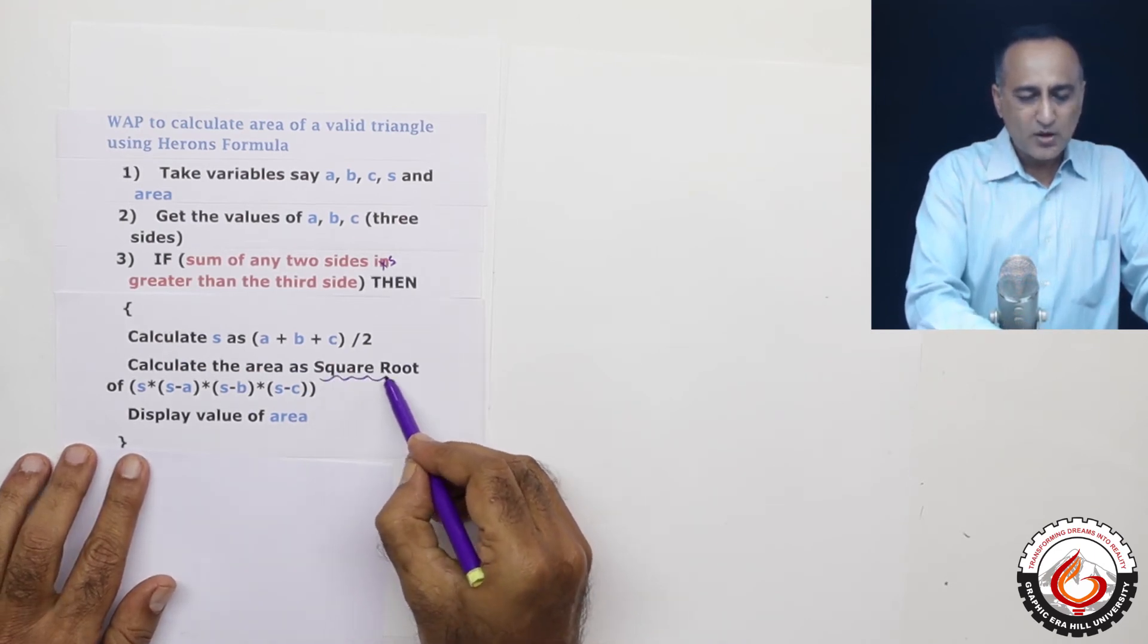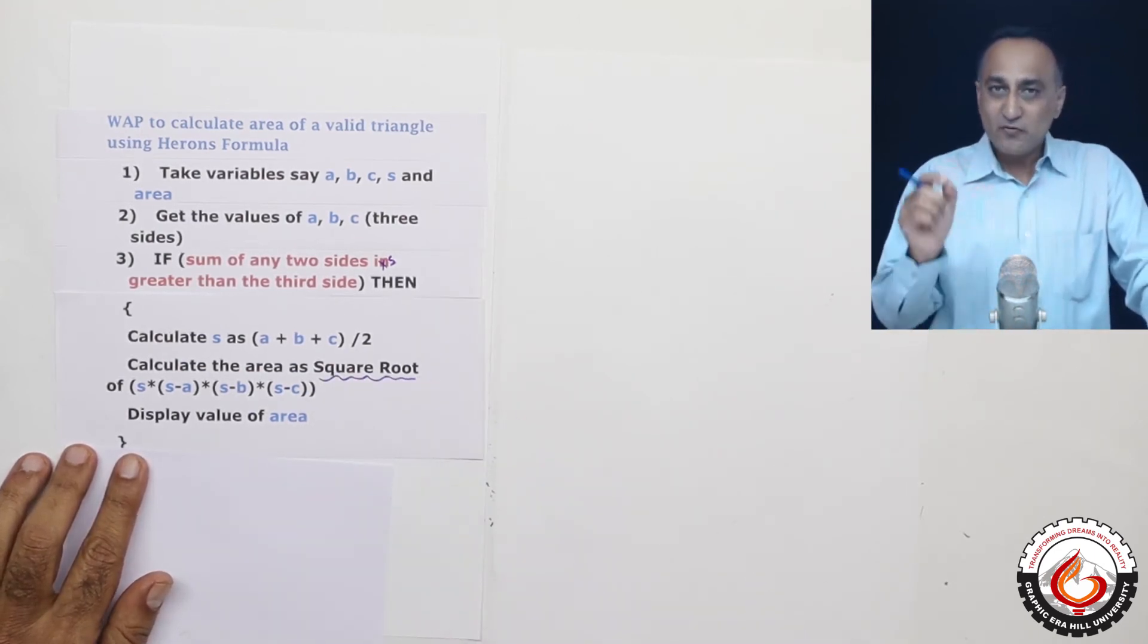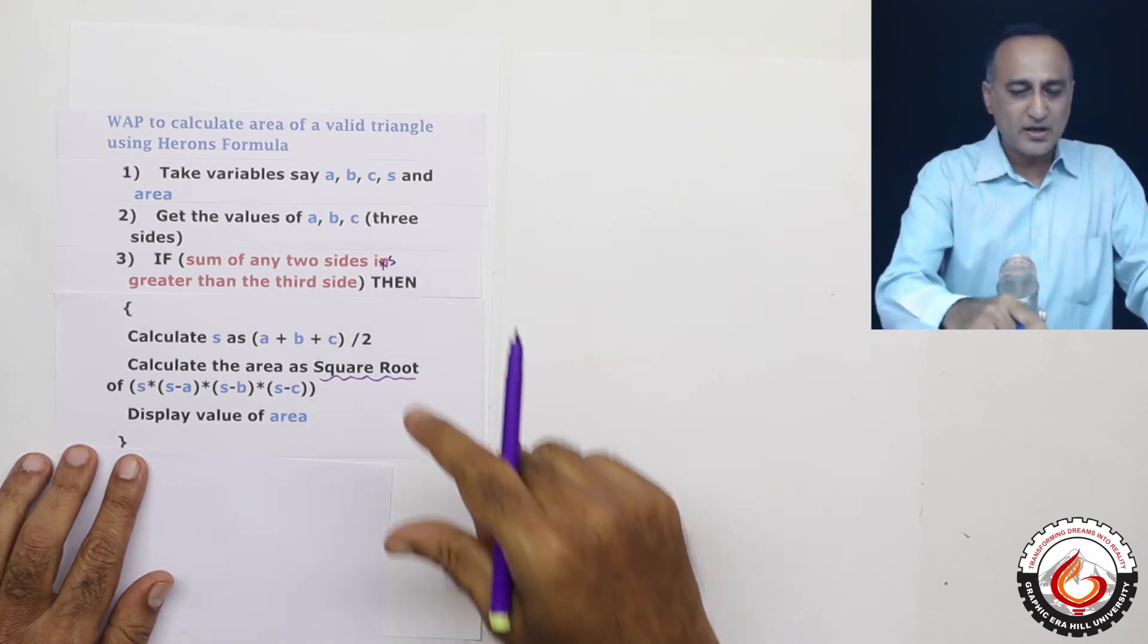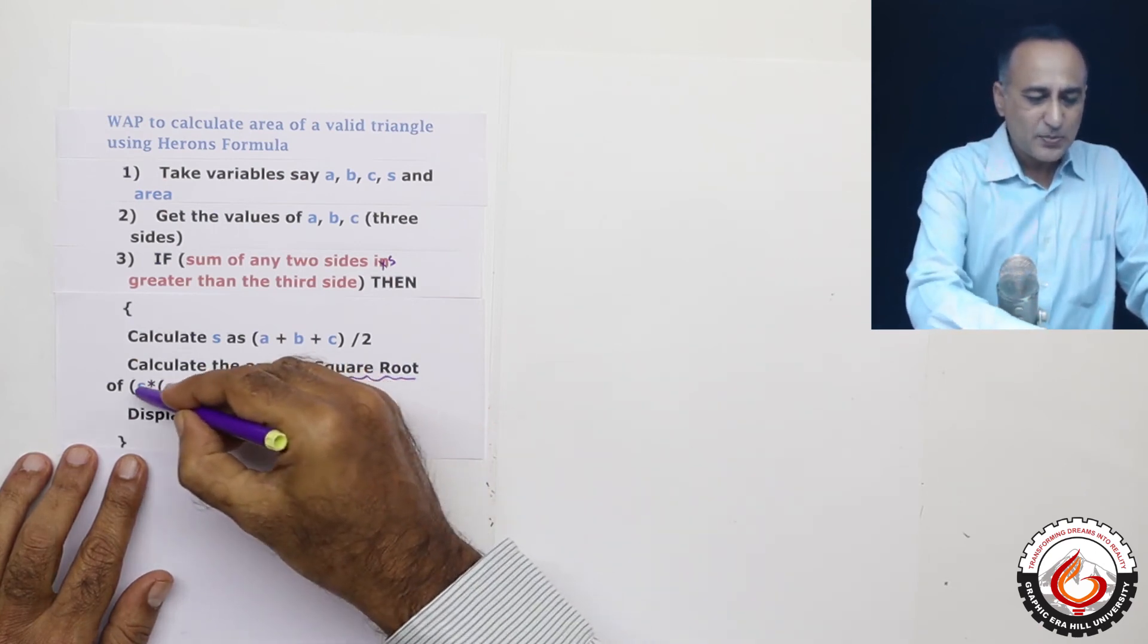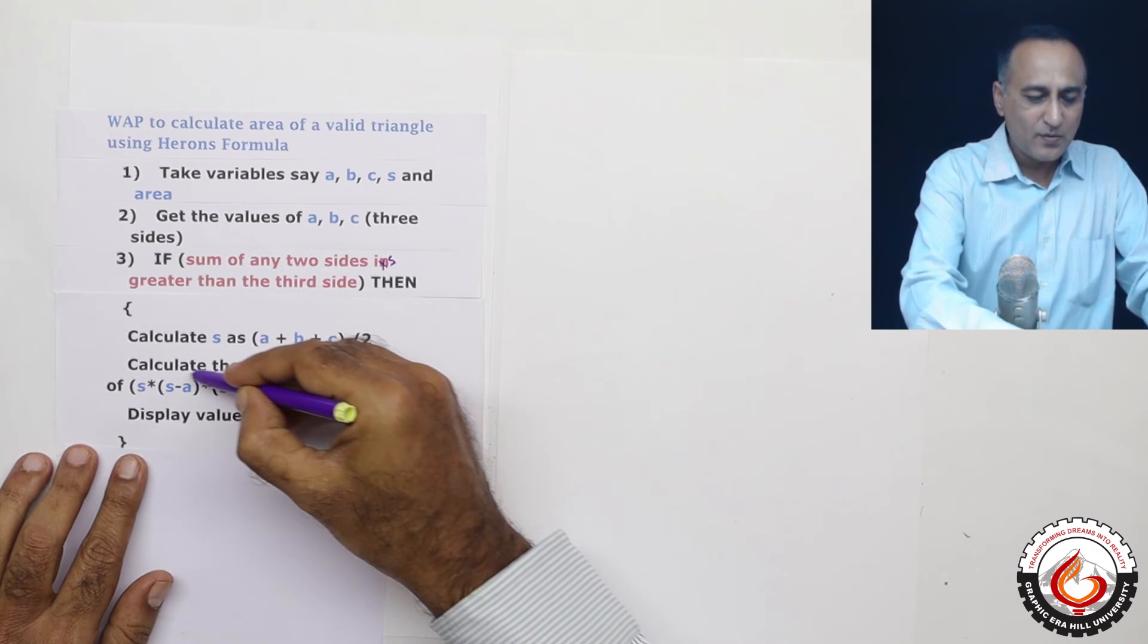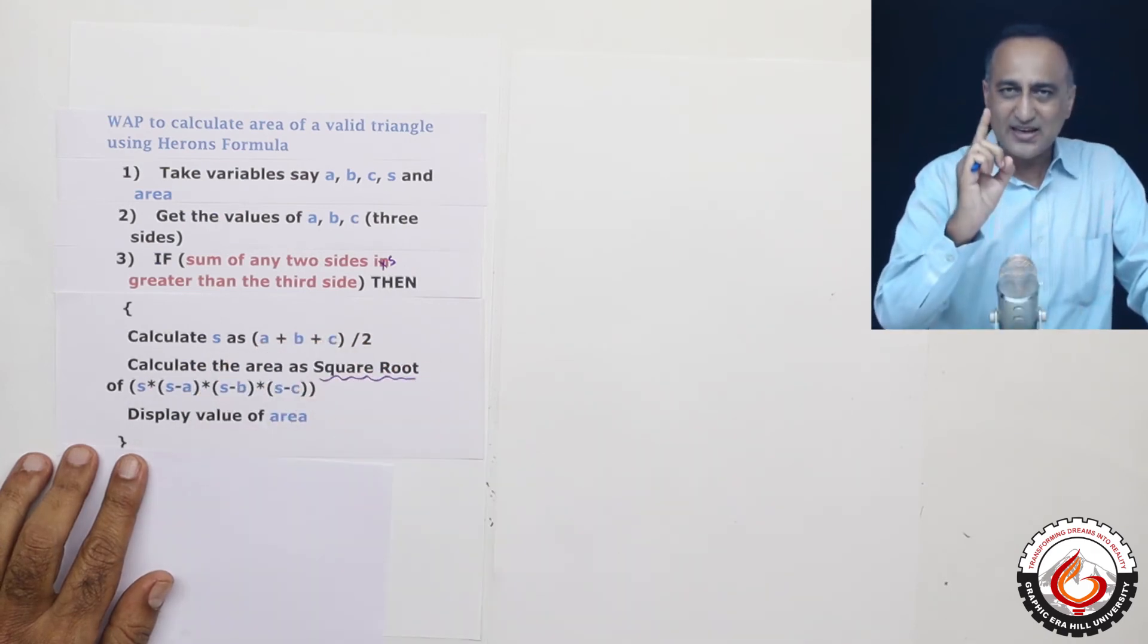Now for this square root, we are not writing any code. We are assuming that any language which we are going to write this particular logic in will have code available for us that if we send this particular number.